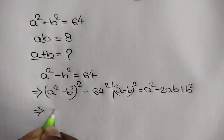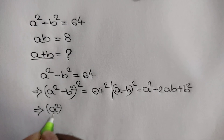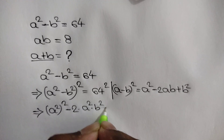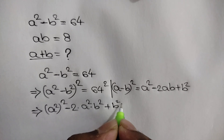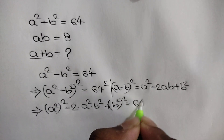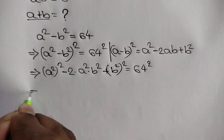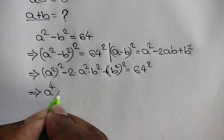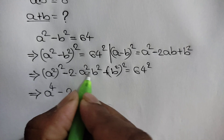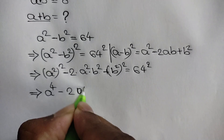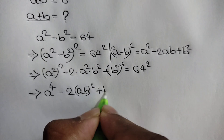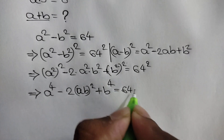Applying this rule, we can write a squared whole squared minus 2 times a squared times b squared plus b squared whole squared is equal to 64 squared. That means a to the power 4 minus 2 times a squared b squared plus b to the power 4 is equal to 64 squared.